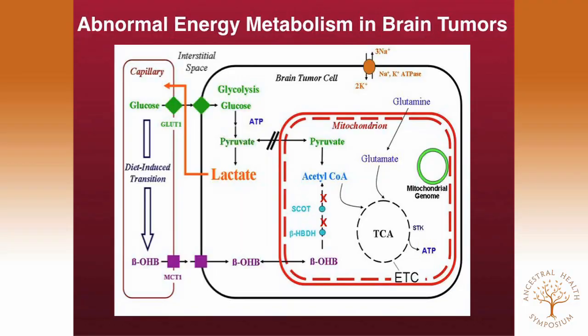In brain cancer — and most cancers — glucose is the primary fuel. It enters through transporters, goes through the Embden-Meyerhof pathway to pyruvate. In normal cells, pyruvate would be fully oxidized in the TCA cycle. But because of mitochondrial problems in brain tumors, pyruvate is fermented to lactate. Lactate goes into the circulation, goes to the liver, and is converted back to glucose through the Cori cycle. Calorie restriction lowers blood glucose naturally, and ketone bodies then enter the brain. Crucially, tumor cells cannot metabolize ketone bodies for energy, and normal cells upregulate glucose transporters, putting additional metabolic pressure on the cancer cells — they become metabolically marginalized.